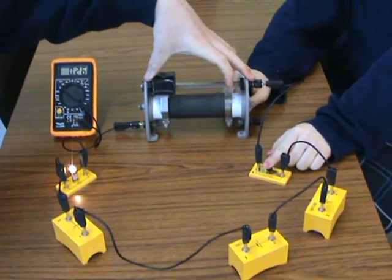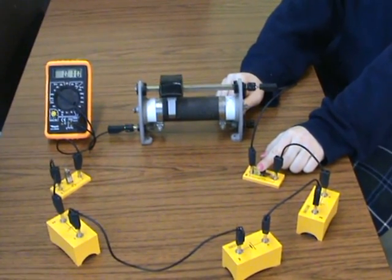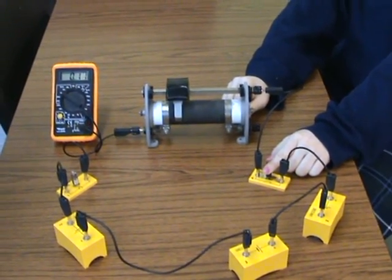By sliding the contact, the bulb gets dimmer and the current decreases because the resistance increased.